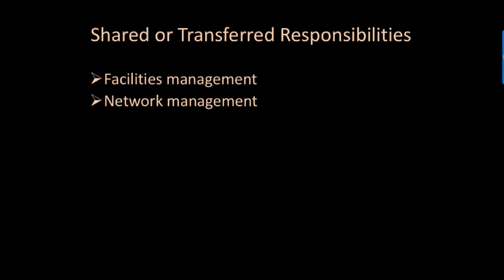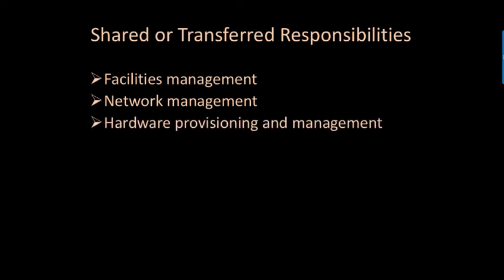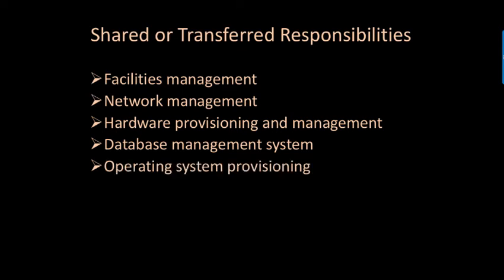Let's look at the primary activities that must take place to maintain secure operation including availability. The first is facility management, which includes maintaining the buildings, physical security, and environmental controls. Next is network management, which includes implementation, maintenance, and redundancy for availability of cabling, communications, switches, routers, IPS, etc. Hardware provisioning and management includes setup and maintenance of servers and storage. Database management systems provide the framework for creating and managing databases. Installation and provisioning of operating systems includes version control, patching, and configuration, and also management of any software needed for backups and storage management.